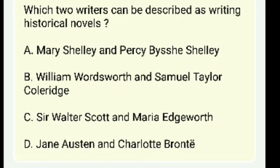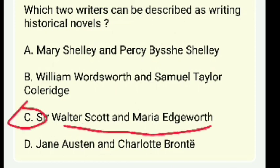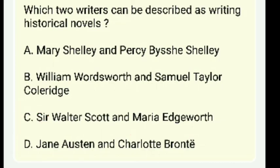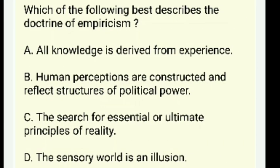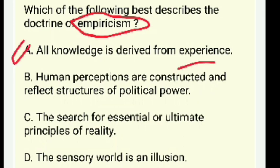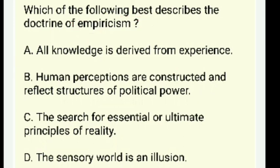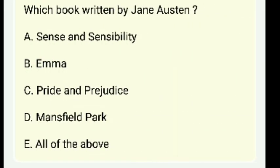Which two writers can be described as writing historical novels? The answer is Sir Walter Scott and Maria Edgeworth. Empiricism denotes that all knowledge is derived from experience. Jane Austen's books include Sense and Sensibility, Emma, Pride and Prejudice, and Mansfield Park.